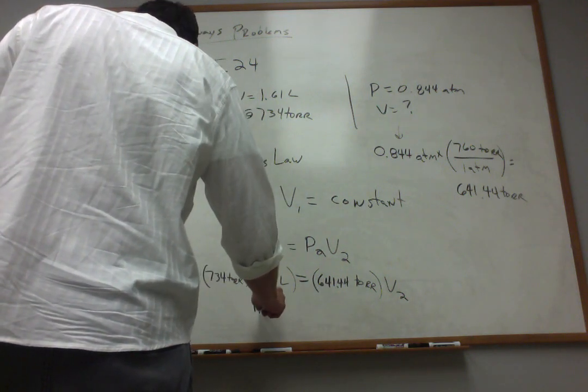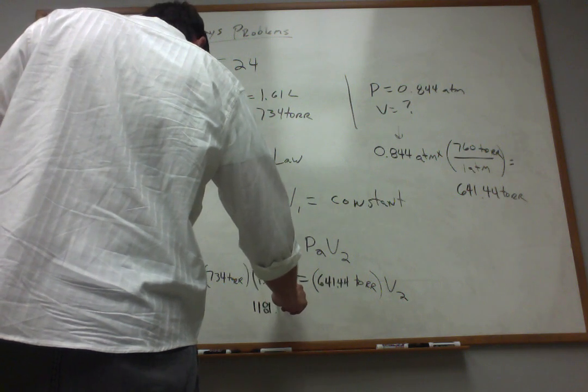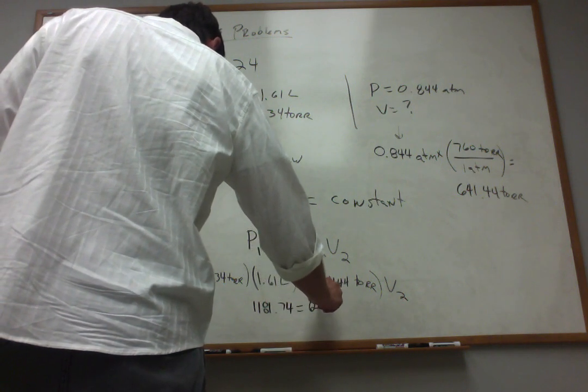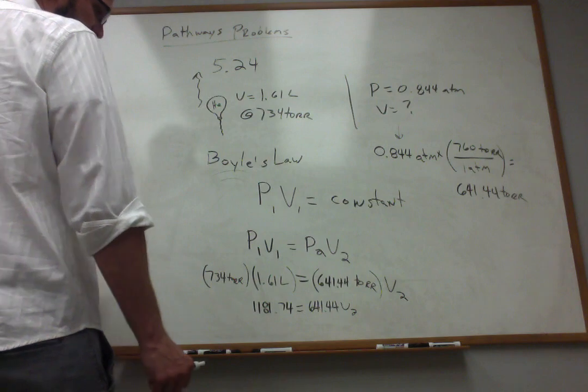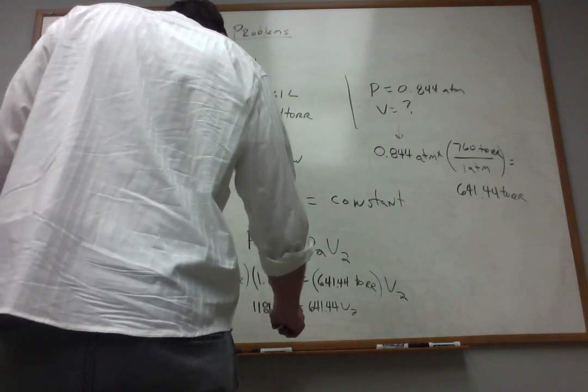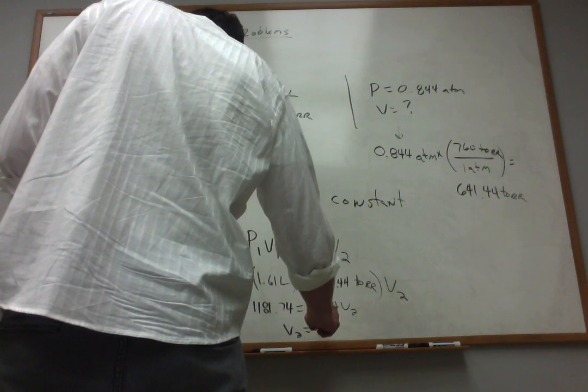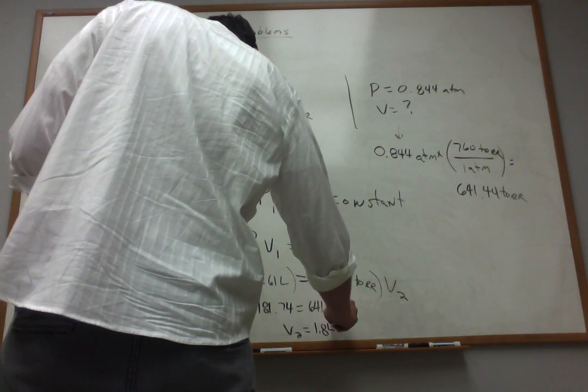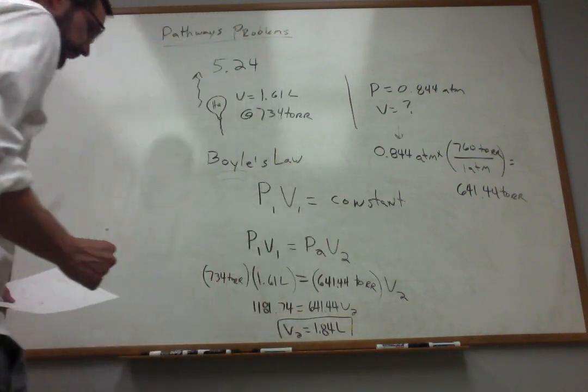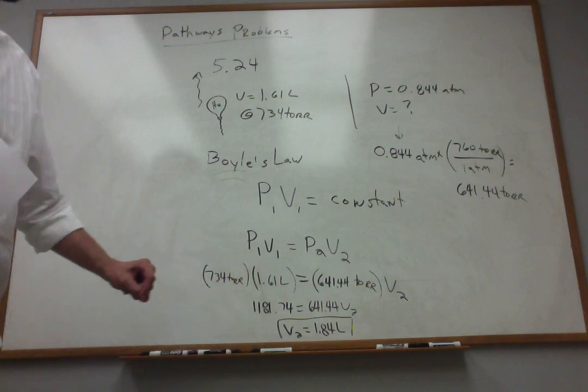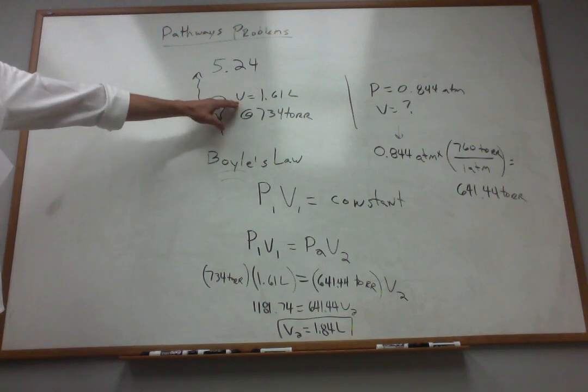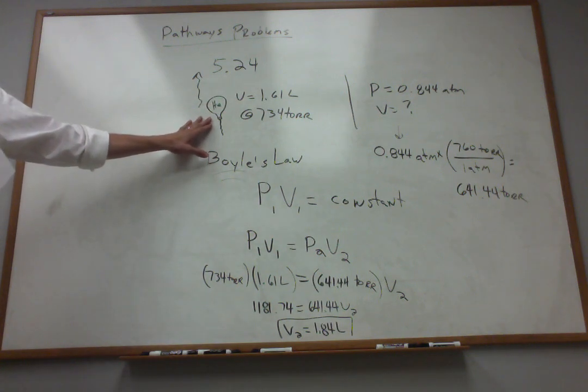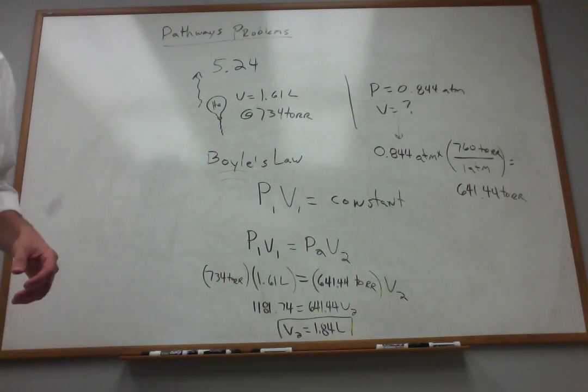So if I do this product, I get 1181.74 is equal to 641.44V2. You can call that x if you want. Now this is just a real simple algebra problem. You just have to do the division. You find that your x or your V2 is equal to 1.84 liters. So 1.84 liters is the volume that corresponds with this pressure for a sample of gas that was initially under these conditions. Again, we can have no change in temperature and no change in number of moles of gas for this relationship to work out. But nonetheless, that's how you work it.